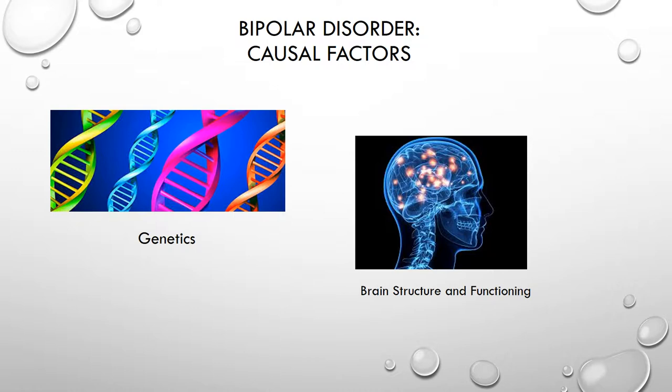Scientists are also studying illnesses with similar symptoms, such as depression and schizophrenia, to identify genetic differences that may increase a person's risk for developing bipolar disorder — finding these genetic hotspots may also help explain how environmental factors increase risk. Studies of identical twins have shown that the twin of a person with bipolar illness does not always develop the disorder, despite sharing all of the same genes. Research suggests many different genes and environmental factors are involved, though scientists do not yet fully understand how these factors interact to cause bipolar disorder.